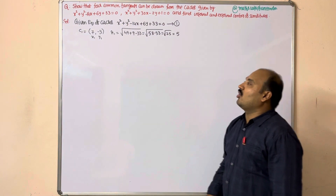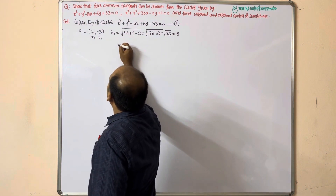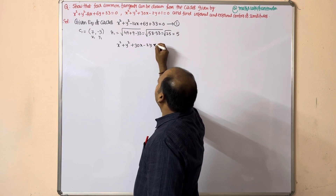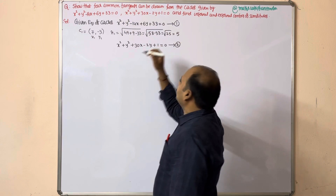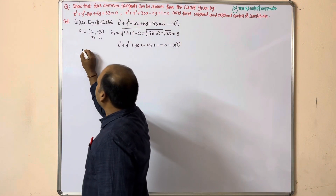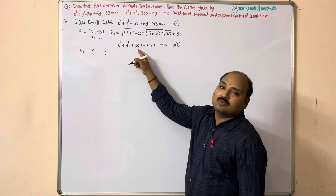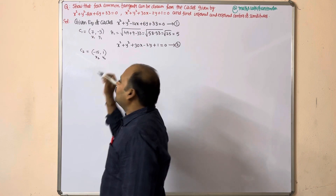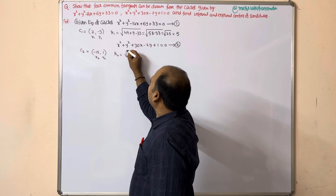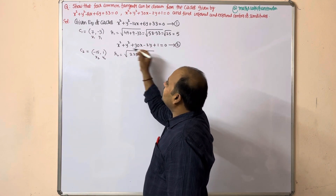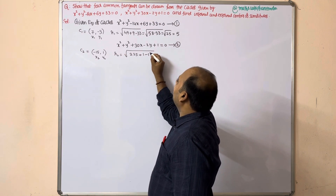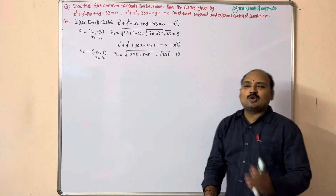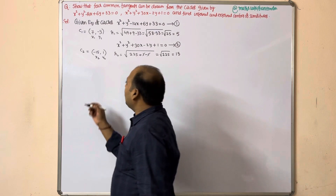The second circle is x² + y² + 30x − 2y + 1 = 0 — equation (2). Center C2 = (−15, 1), taking this as (x2, y2). Radius of second circle r2 = √(15² + 1² − 1) = √(225 + 1 − 1) = √225 = 15.